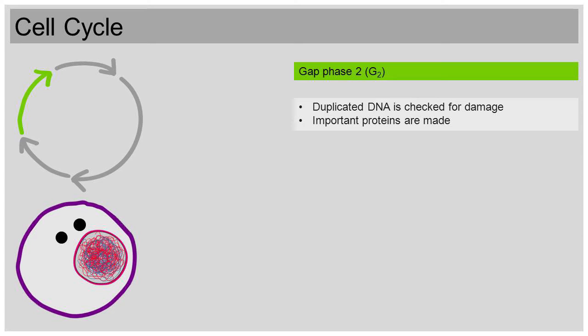During G2 phase, the duplicated DNA is checked for damage. In addition, proteins that are important for mitosis are made. But now mitosis can start.